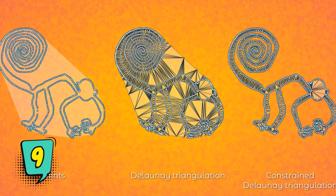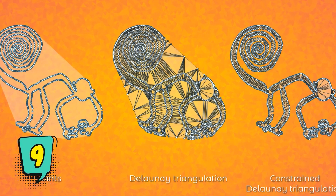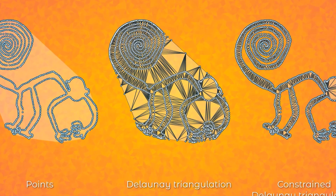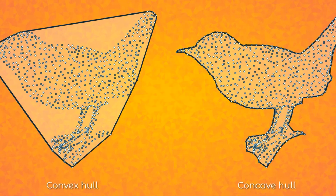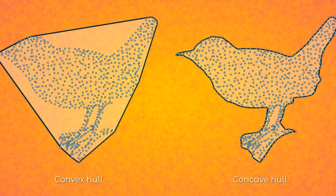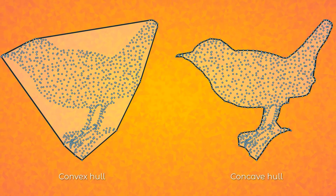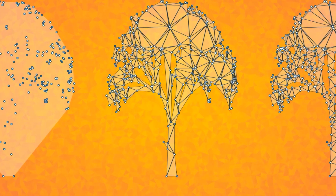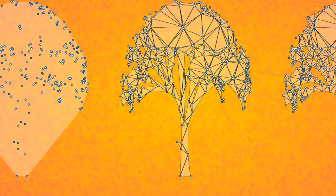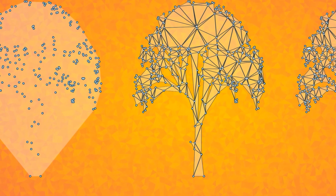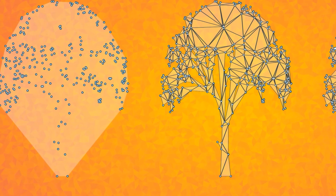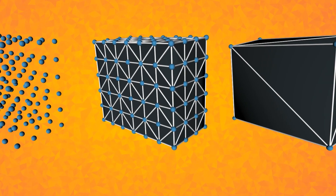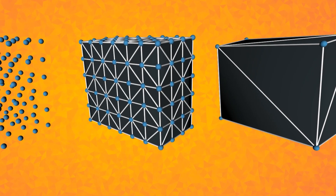The Geometry Algorithms asset is a collection of algorithms that will help you generate or improve complex geometry from any data set. By just writing two lines of code you should be able to use any algorithm in this asset.